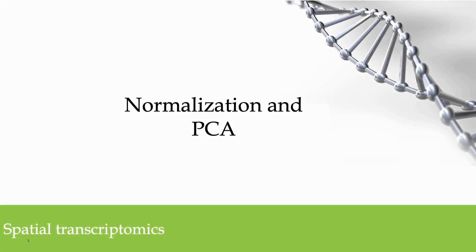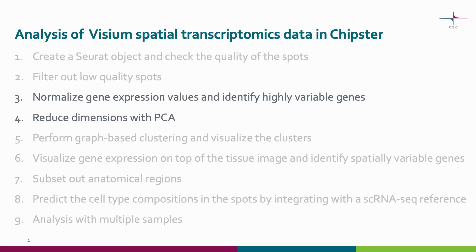In this video, we will cover the normalization and PCA step when analyzing Visium spatial transcriptomics data in Chipster. This step consists of two methods: normalization with SC-transform and dimensionality reduction with principal component analysis.